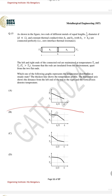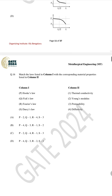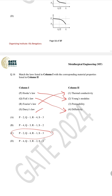For question number 16, the matching problem, the correct answer is C. Hooke's law is for Young's modulus, Fick's law is for diffusivity, Fourier's law is for thermal conductivity, and Darcy's law is for permeability.